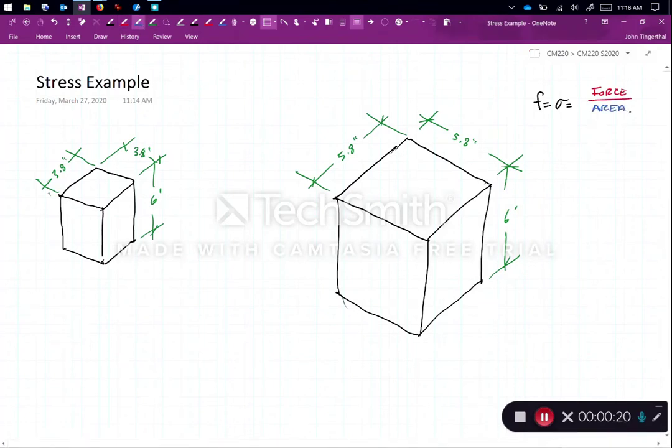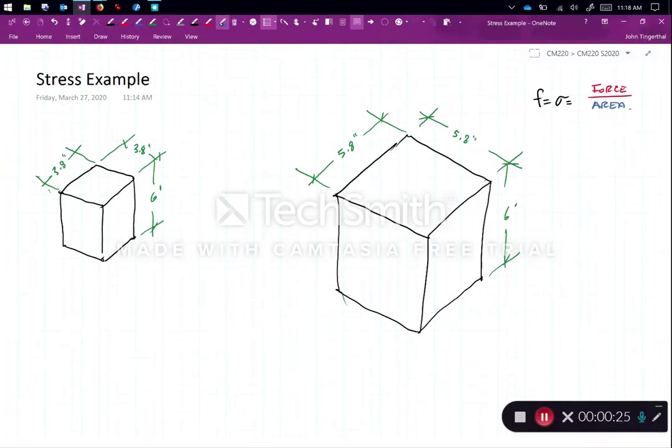So what we did is we took a force. In one case, on the smaller column, we put in 600 kips of force. And in the bigger case, we also put in 600 kips. So in this case, the force is the same.